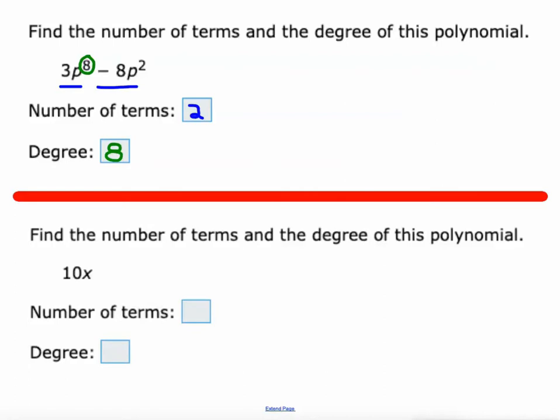What about one more of these. The number of terms: this has just got one term, and some people might think this has a degree of zero, but this is x to the first power. So it is first degree.